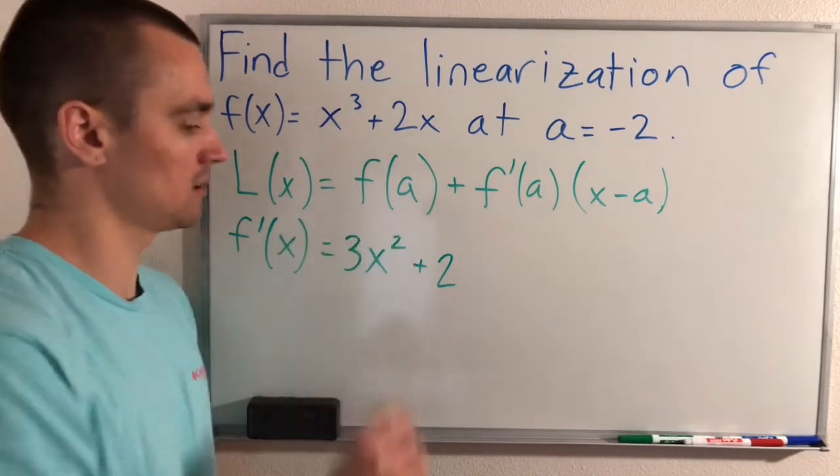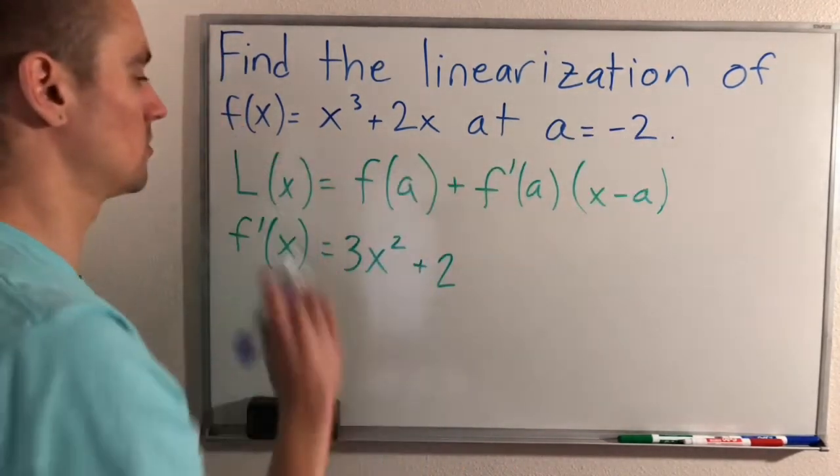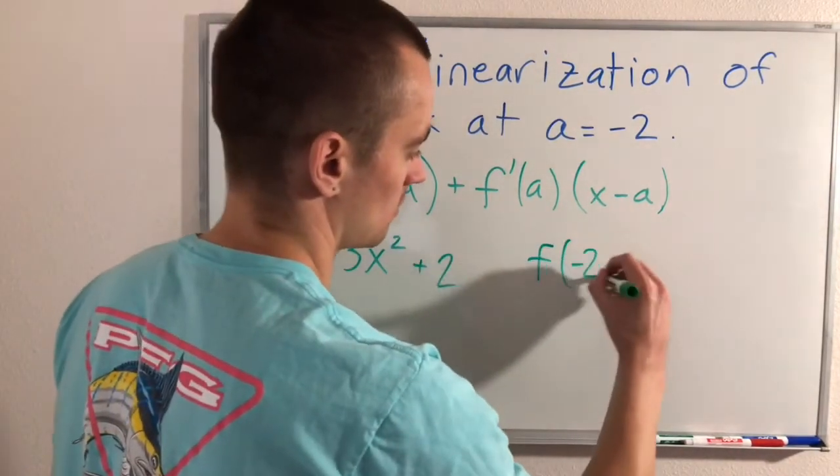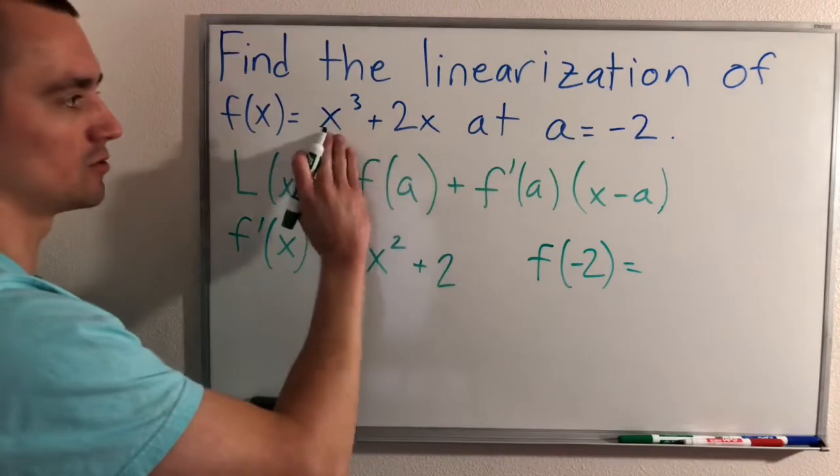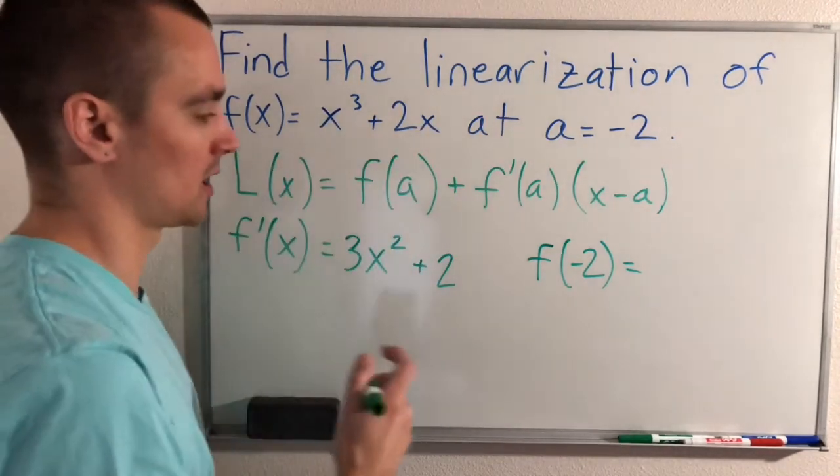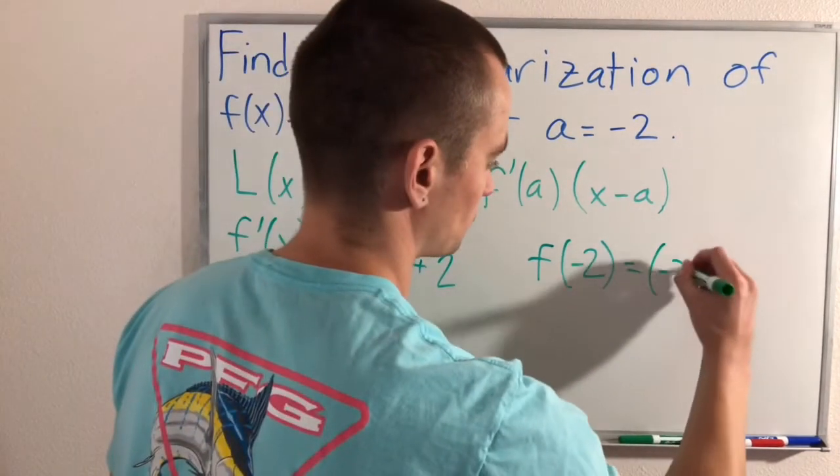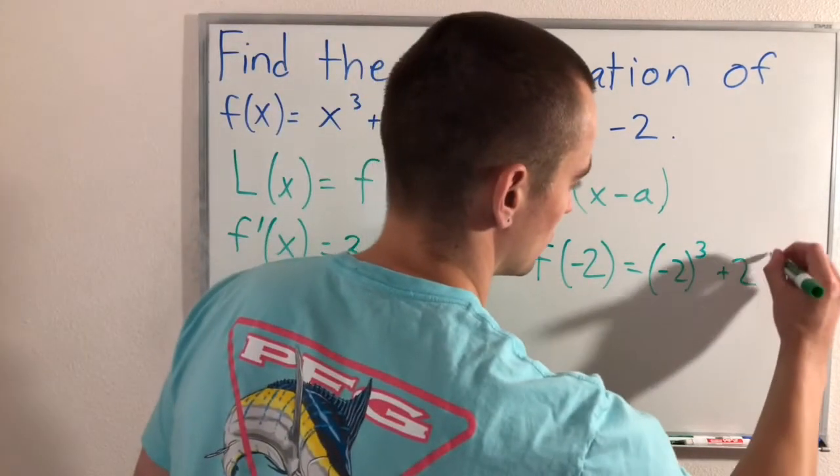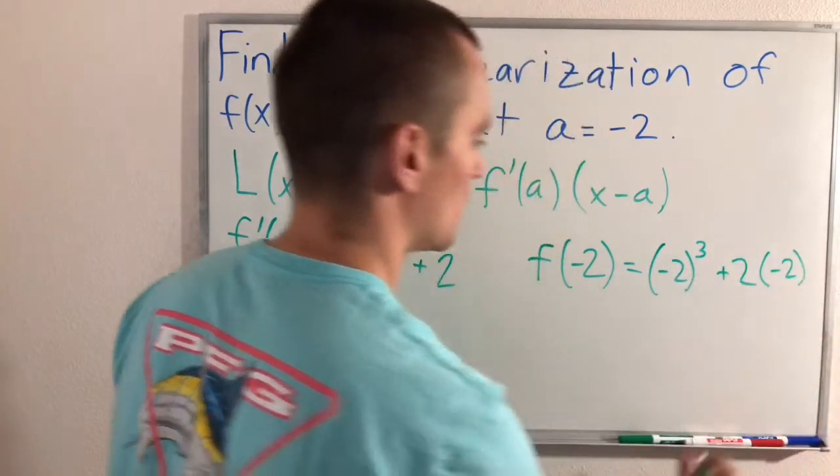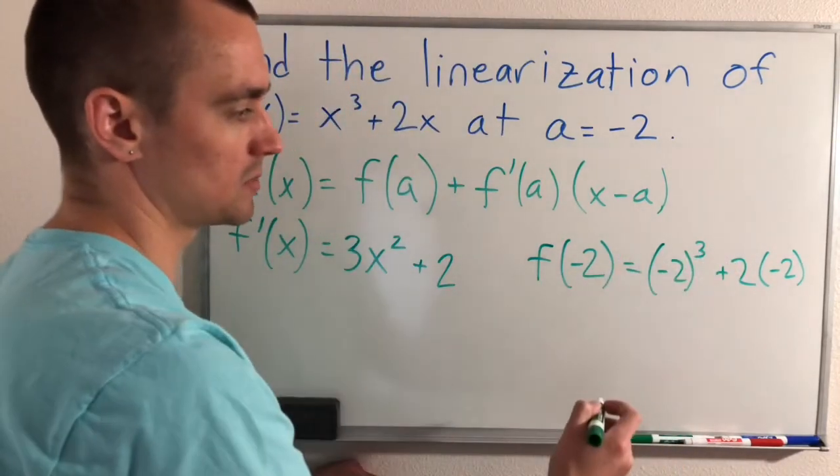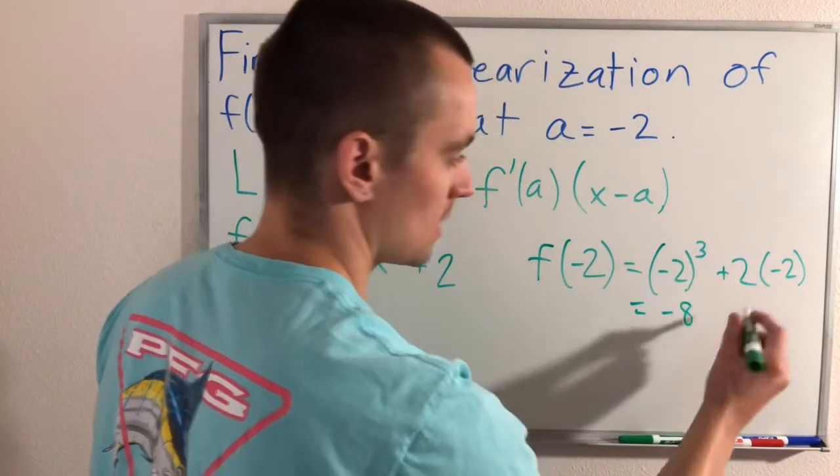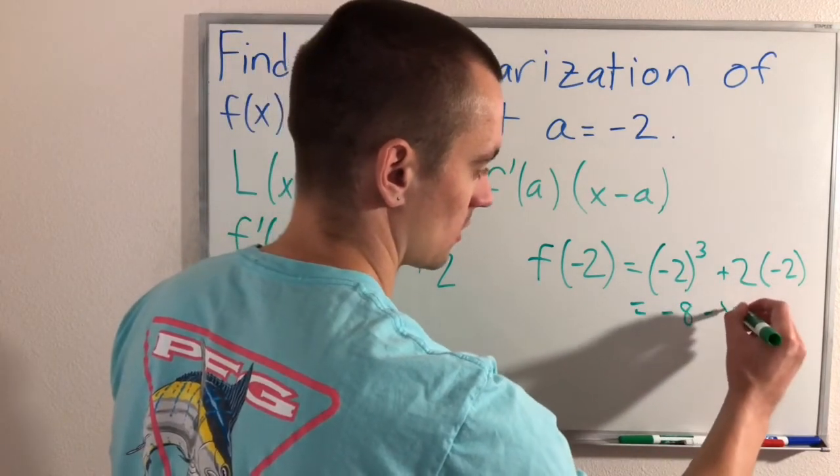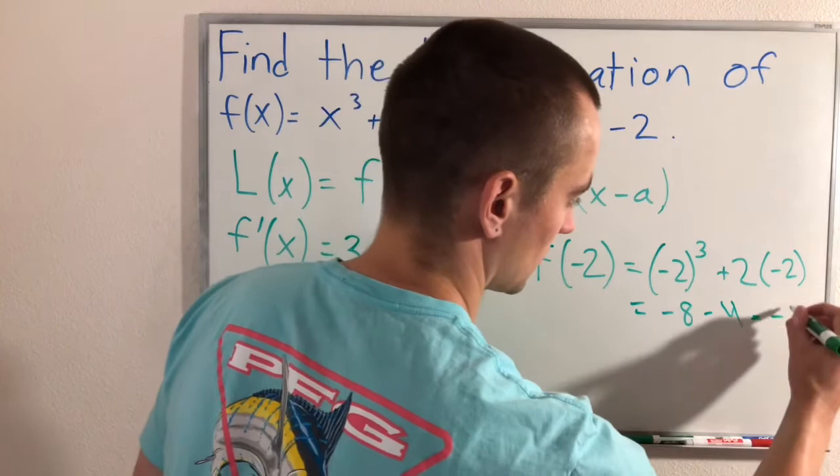So now we're going to use this to find the linearization. First thing we want to find is f(a), so a is negative 2, we need to find f(-2), which basically just means plugging in negative 2 for our x into our function f. So that'll be (-2) cubed plus 2 times (-2). Negative 2 cubed is negative 8, and then 2 times minus 2 is negative 4, which will give us negative 12.